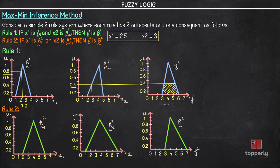Similarly, we do this for Rule 2. We find the membership values for x1 and x2 in Rule 2's graphs. For x1 = 2.5, the corresponding membership value is 0.3. For x2 = 3, the corresponding membership value is 0.7.